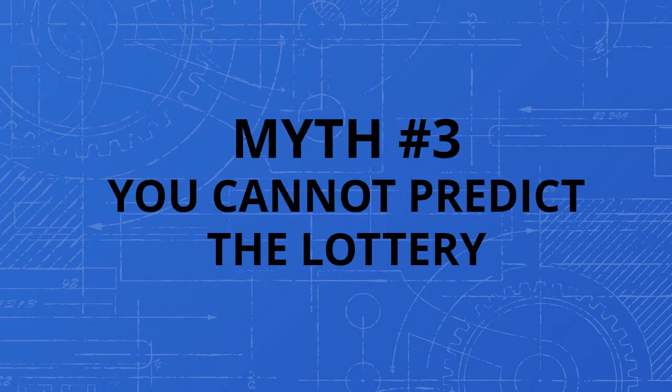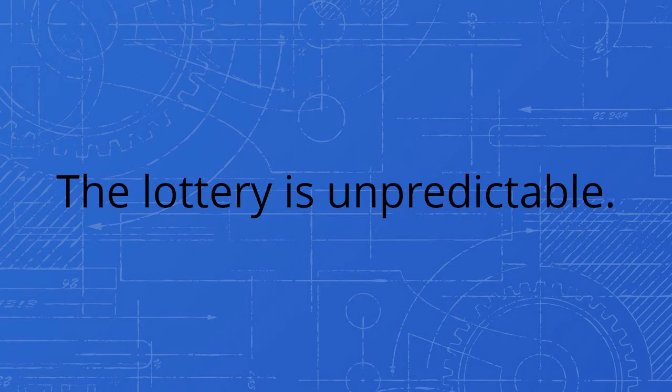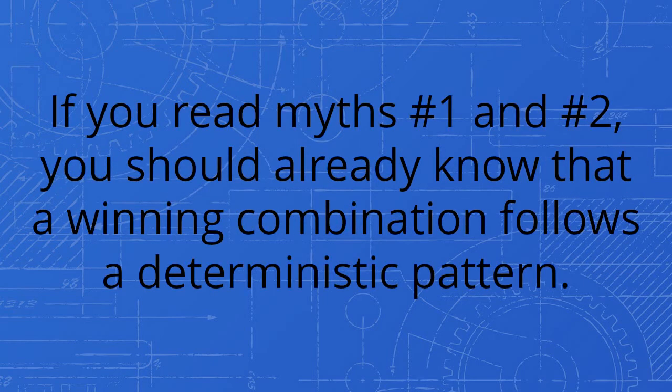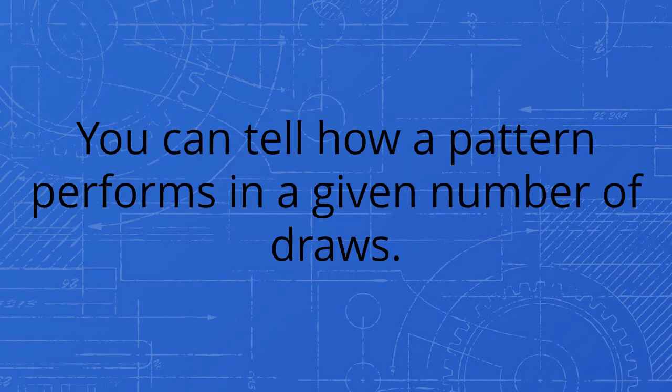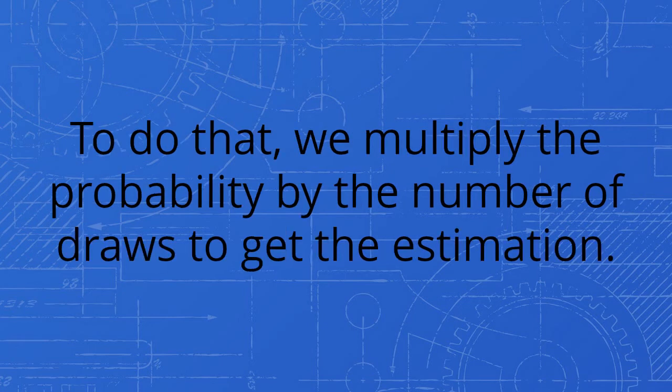Myth number three: you cannot predict the lottery. The lottery is unpredictable, but you can predict the lottery to an extent. If you read myths number one and number two, you should already know that a winning combination follows a deterministic pattern. You can tell how a pattern performs in a given number of draws. To do that, we multiply the probability by the number of draws to get the estimation.